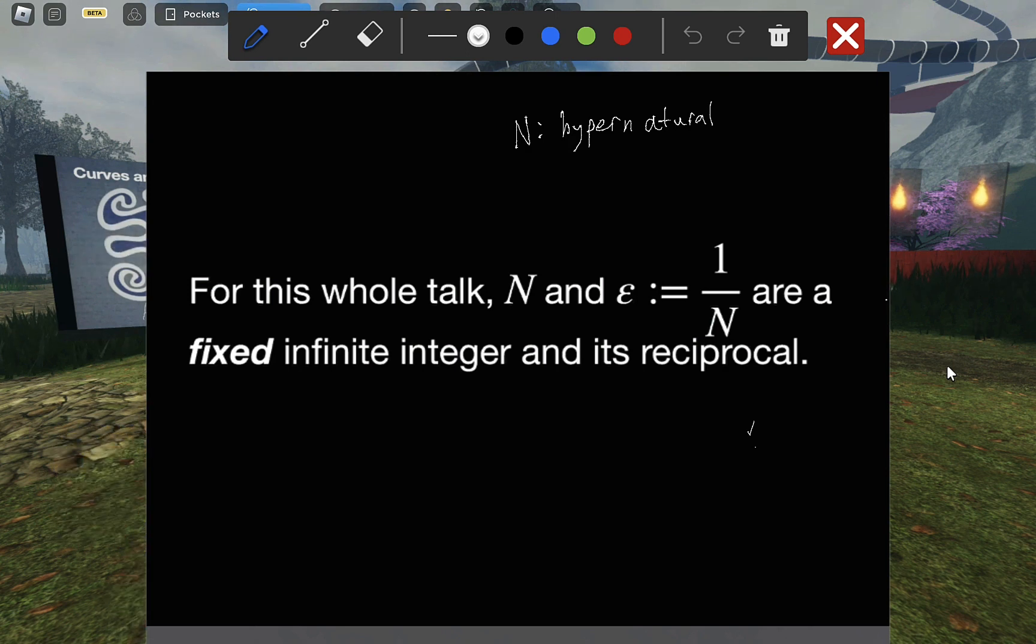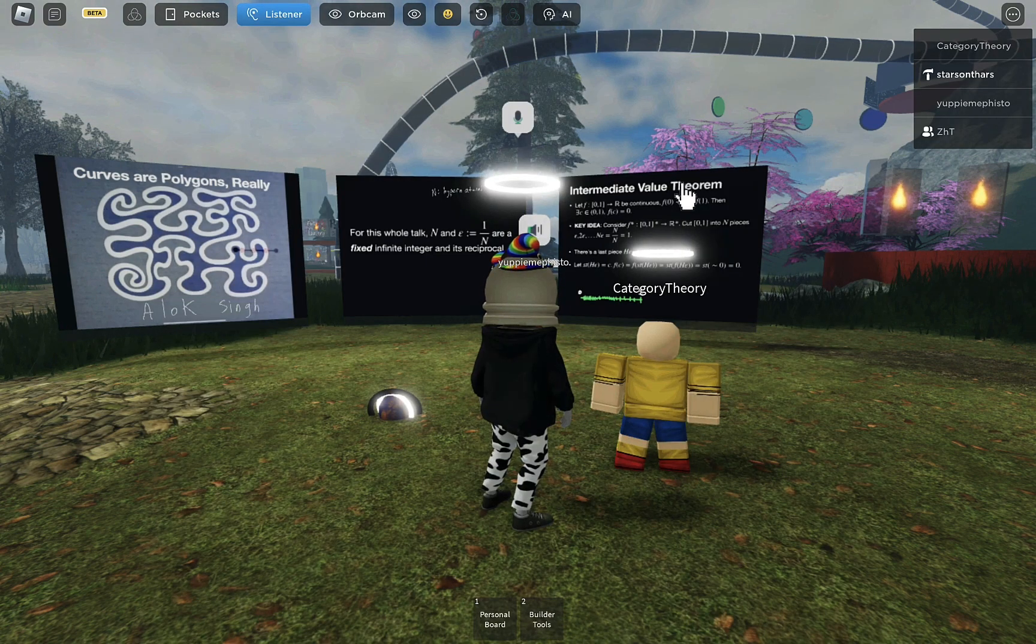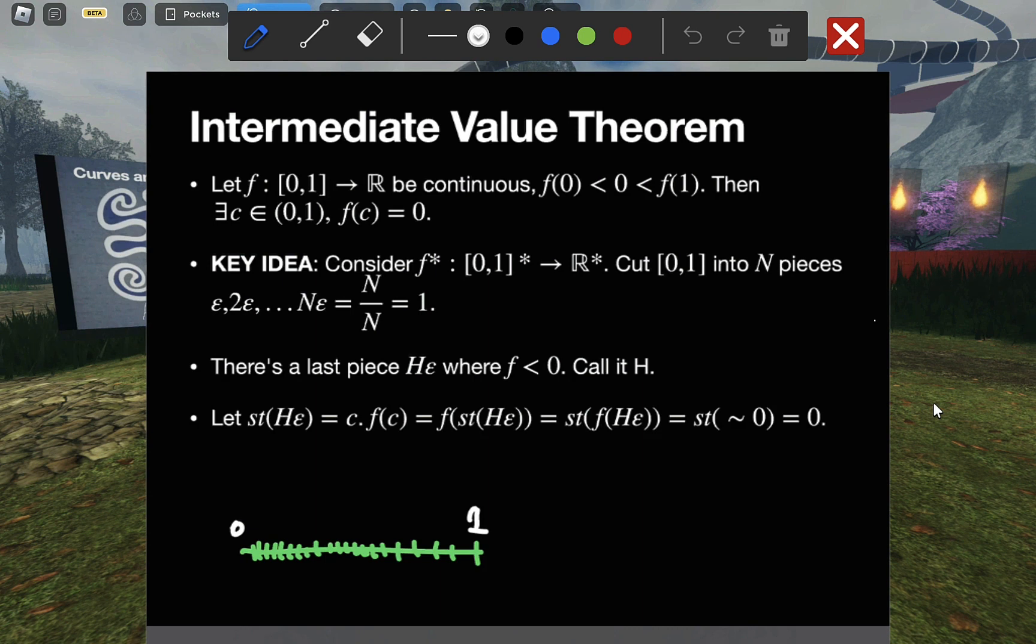We're going to use this sort of hyper perspective to look at a hopefully familiar theorem, the intermediate value theorem, which I set up in the specific form of the unit interval rather than arbitrary one, but it doesn't really matter.